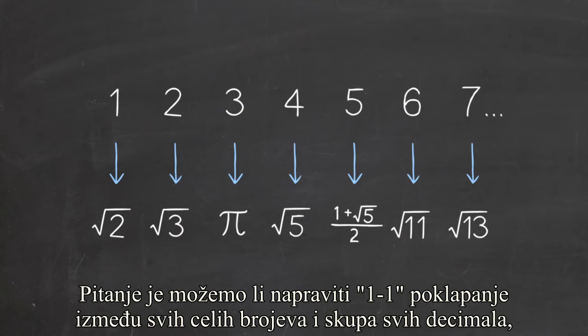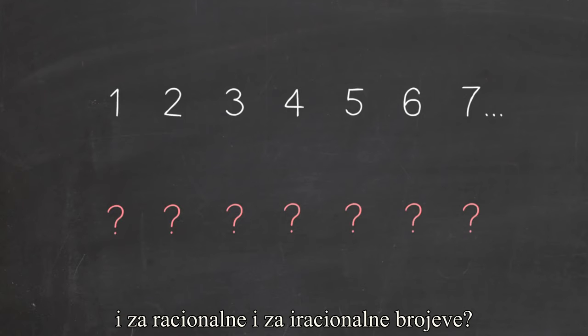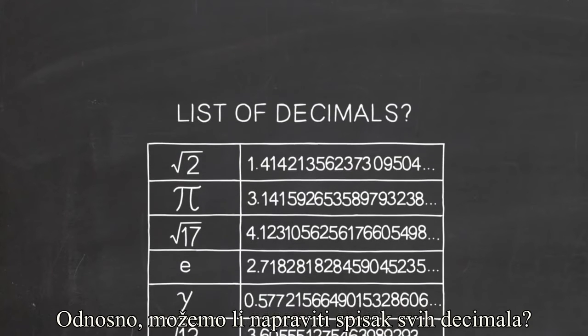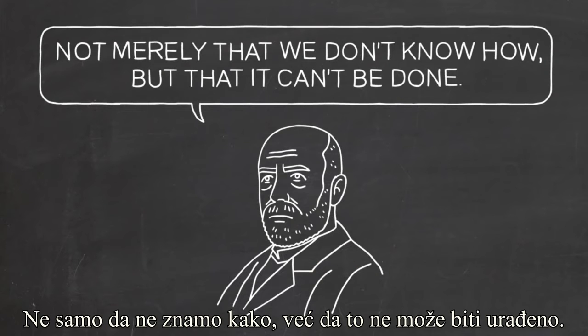So, can we make a one-to-one match between the whole numbers and the set of all the decimals, both the rationals and the irrationals? That is, can we make a list of all the decimal numbers? Cantor showed that you can't. Not merely that we don't know how, but that it can't be done.